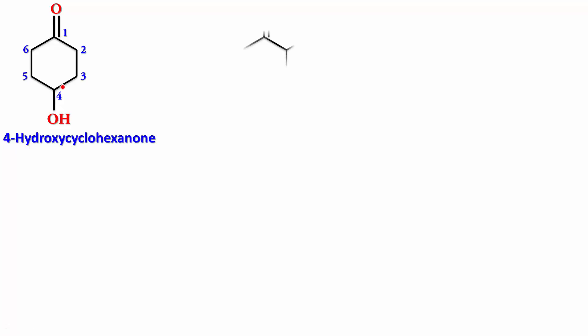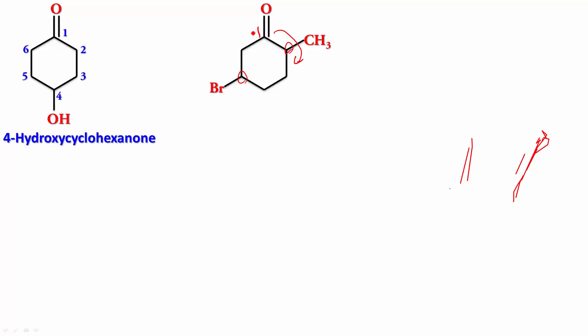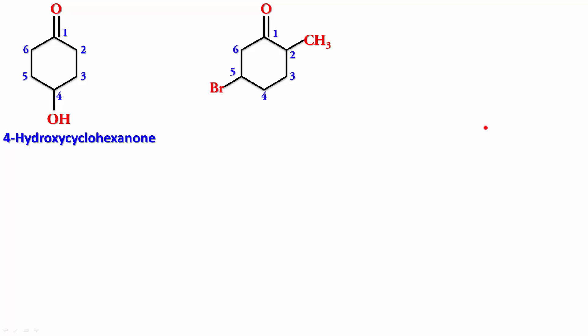Let's try one more. This is 1. Should I give methyl position 2 or bromo position 3? Should I number clockwise or anticlockwise? Obviously, the lowest number must be given to the first substituent, which means we go clockwise: 1, 2, 3, 4, 5, 6. So it's 5-bromo-2-methylcyclohexanone.